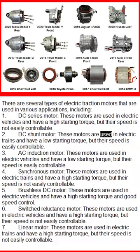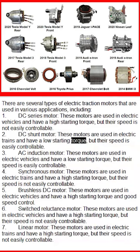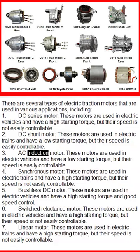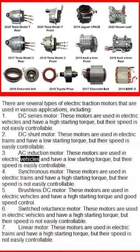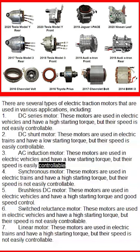DC shunt motors are used in electric trains and have a low starting torque, but their speed is easily controllable. Third, the AC induction motor: these motors are used in electric vehicles and have a low starting torque, but their speed is easily controllable.